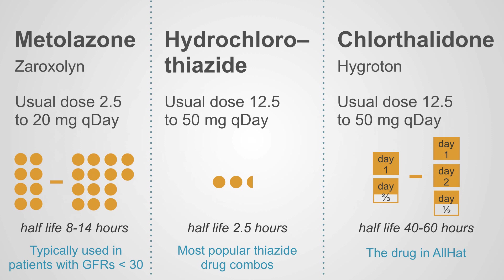There are a number of different thiazides, but three are worth highlighting. Hydrochlorothiazide is the most familiar and the most popular thiazide found in drug combinations. Metolazone, trade name Zaroxolyn, has a much longer half-life and is typically used in patients with low GFRs. Chlorthalidone has the longest half-life of all — measured in days rather than hours — and was the drug used in the largest hypertension trial ever conducted, ALLHAT.